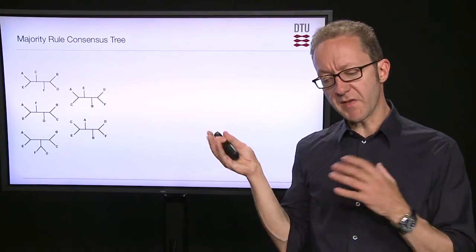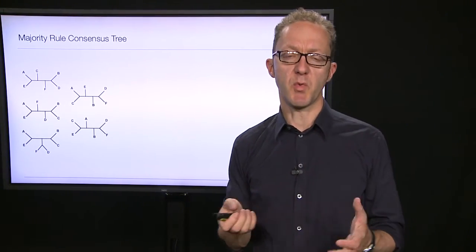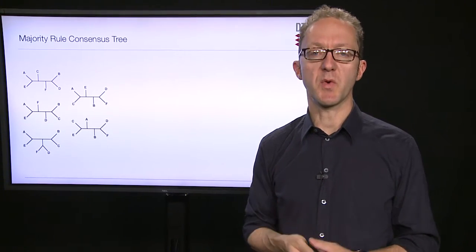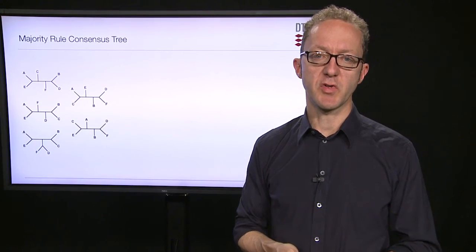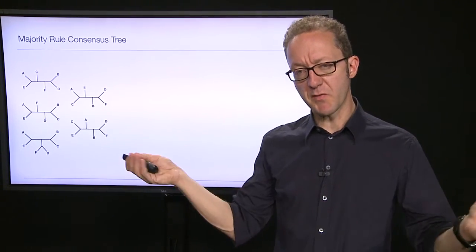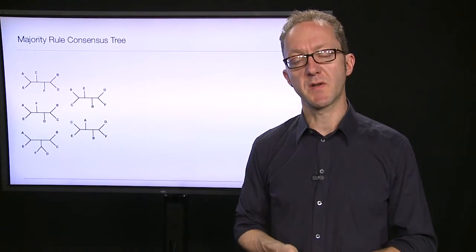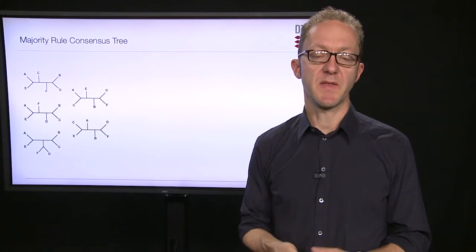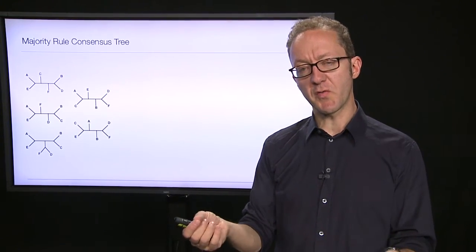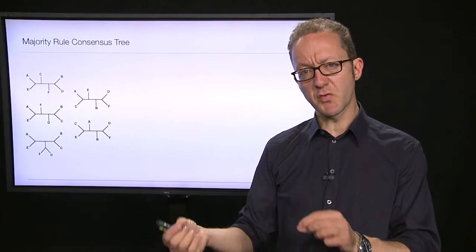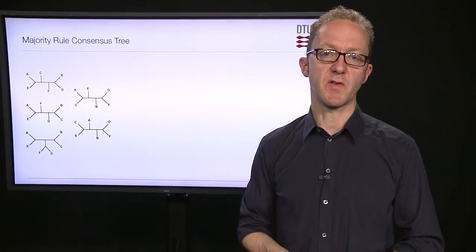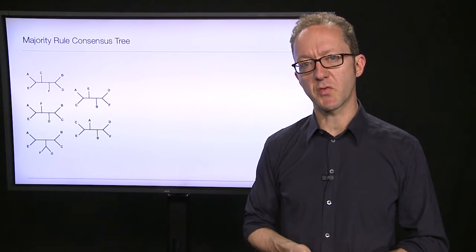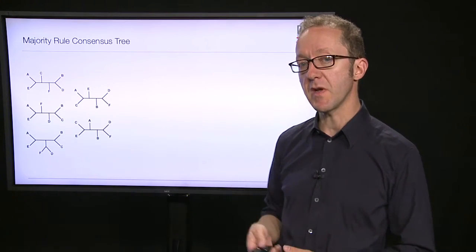The example I just showed is a simple small one where you could easily, just by looking at it, find out what the consensus tree should be. But for bigger trees, we obviously need more stringent ways — we need an algorithm, a recipe that a computer can use in order to find the consensus tree from a set of input trees. That's what I'm going to walk you through on the coming slides.